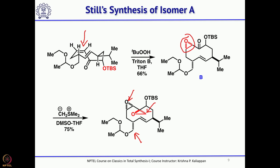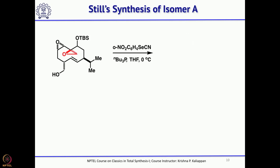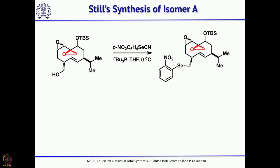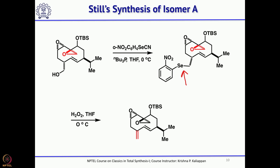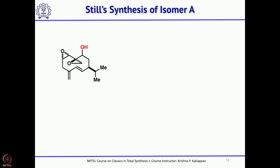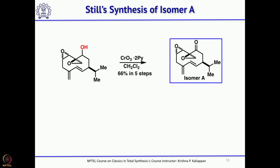To introduce the exocyclic double bond, he removed the ethoxyethyl protecting group with acetic acid/water to get the primary alcohol. That primary alcohol, treated with o-nitrophenylselenocyanide, gave a particular intermediate. Upon treatment with hydrogen peroxide or MCPBA, it forms the corresponding selenoxide, which then undergoes elimination to introduce the double bond. Removal of the TBS group released the secondary alcohol, which upon oxidation with Collins reagent gave the ketone.